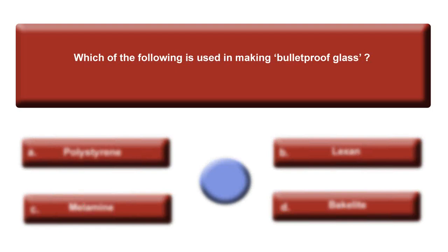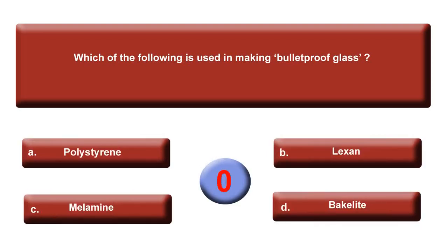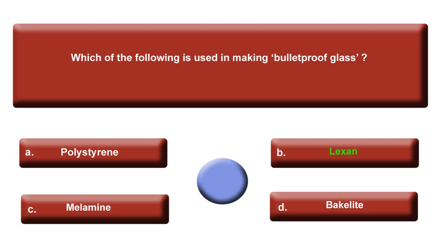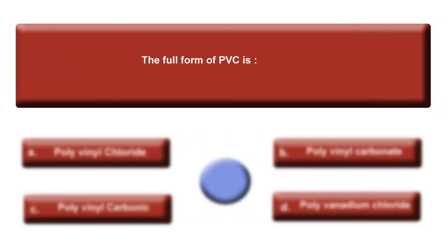Next question: Which of the following is used in making bulletproof glass? Option A: Polystyrene. Option B: Lexan. Option C: Melamine. Option D: Bakelite. Time is up. The answer is B, Lexan.